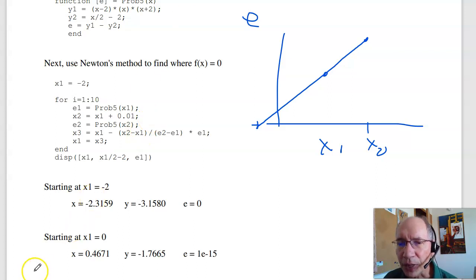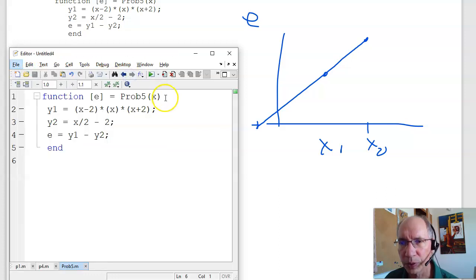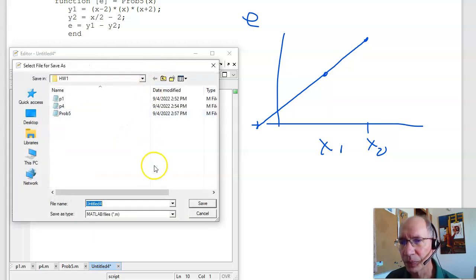If you try it, file, new, script. This is a script, not a function. I'm going to start at minus two, and iterate, and see what it tells me after 10 iterations. Which one is this? This is problem six.